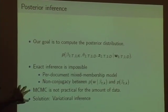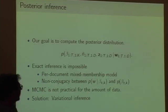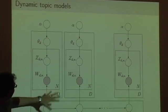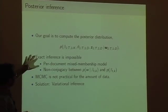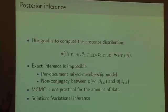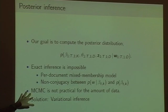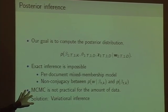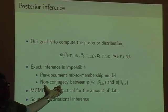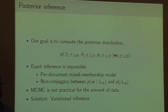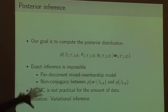Our goal is to compute the posterior distribution. All we observe are the words, and we want to compute all the hidden structure — all the topics over all years, and for each year all the hidden structure for each document. Exact inference is impossible: at each time slice we have an LDA model for which exact inference is already impossible. Gibbs sampling is not practical here due to data size and the loss of conjugacy from the logistic normal. So we use variational inference again to fit all these articles across the entire time series of topics.